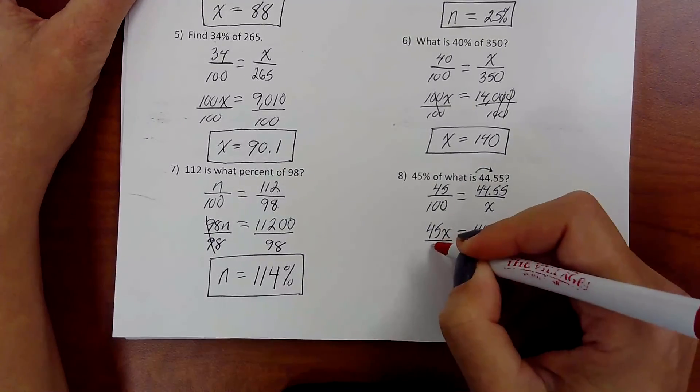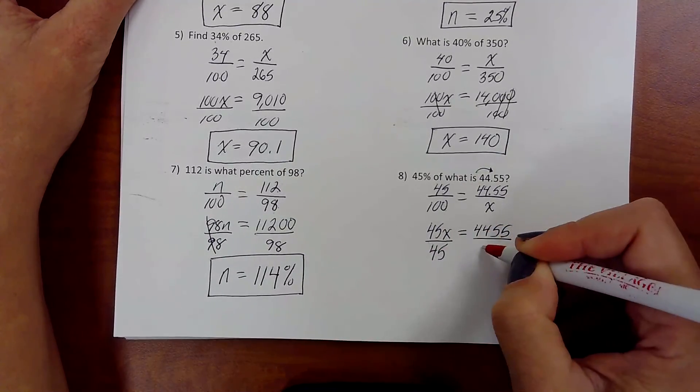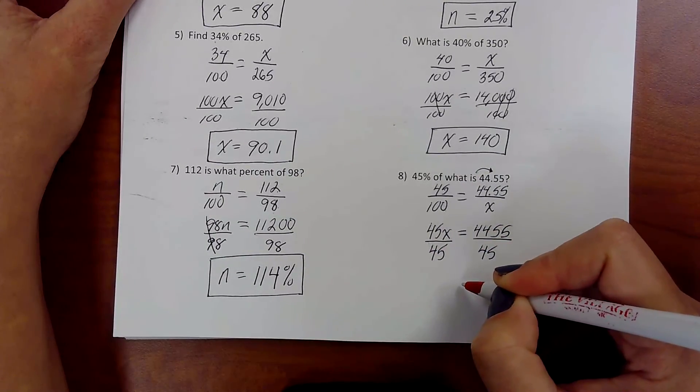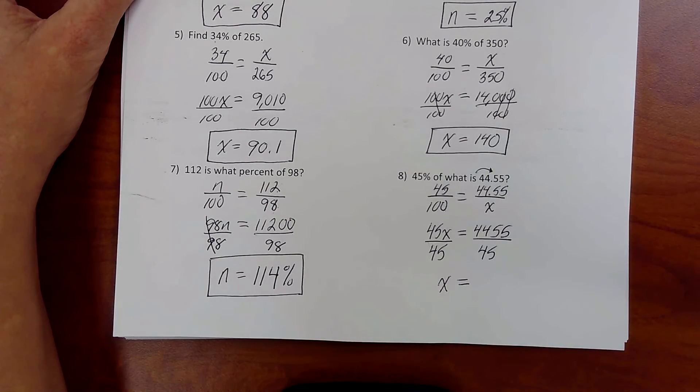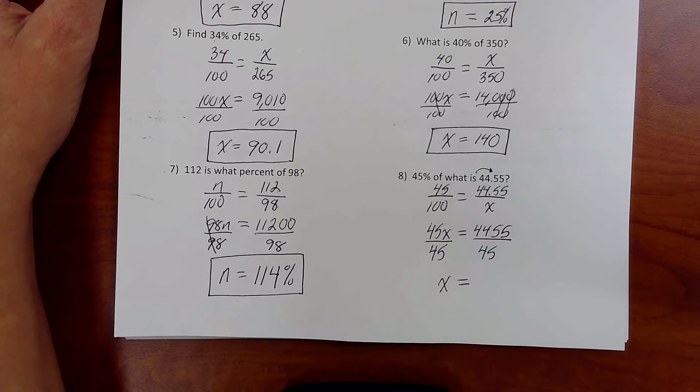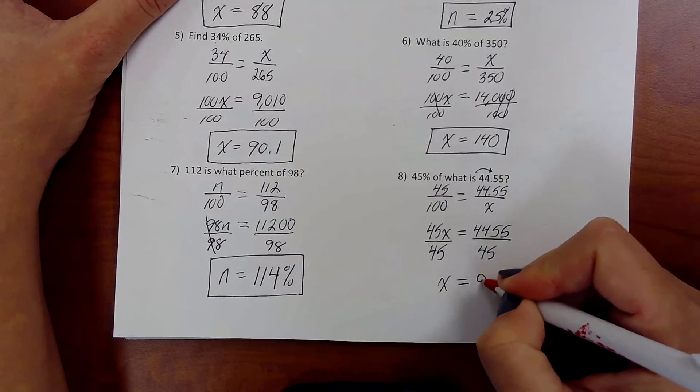Divide it by the 45. And x equals. Let's see. 4455 divided by 45. x equals 99.